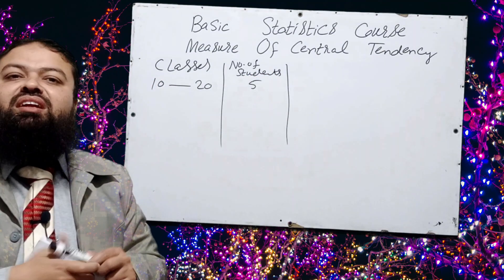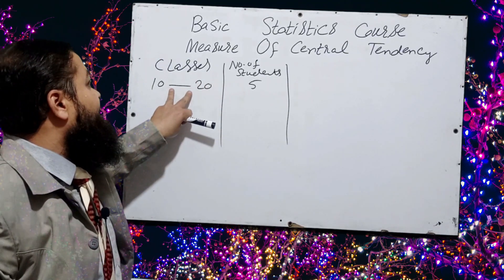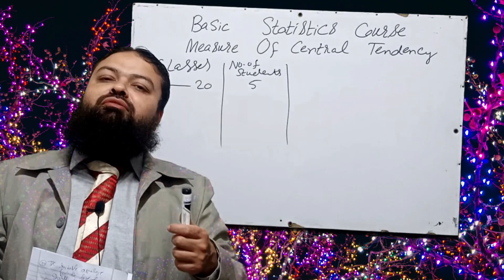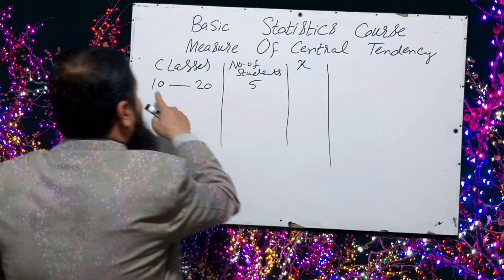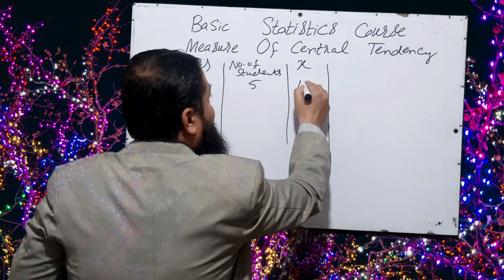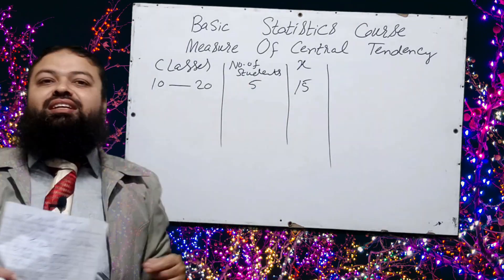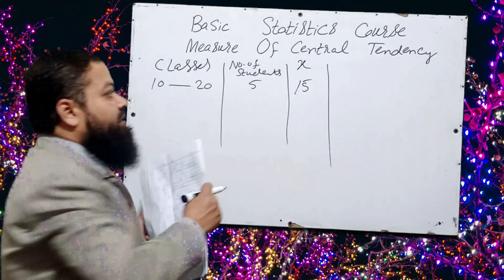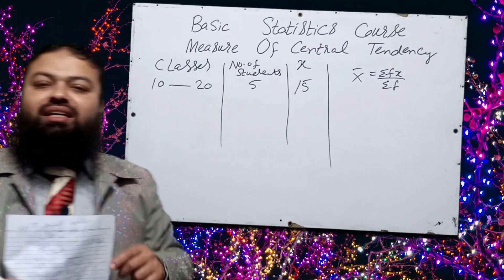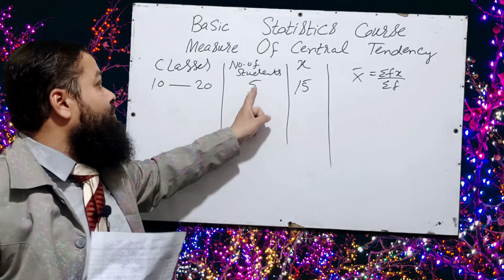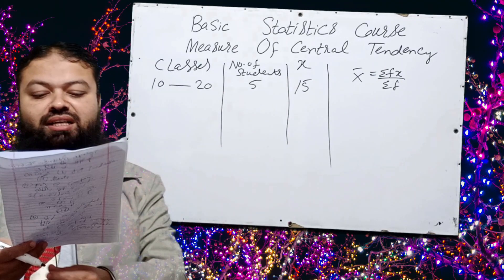For example, if the first class of marks is 10 to 20 and there are five students who got marks in that interval, we find the midpoint: 10 plus 20 is 30, divided by 2 is 15. We assume all five students have marks equal to 15. By applying the formula — summation fx over summation f — we find the mean. The assumption is that all values equal the middle value.